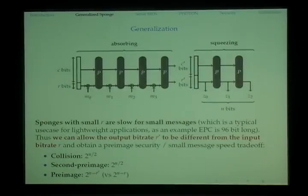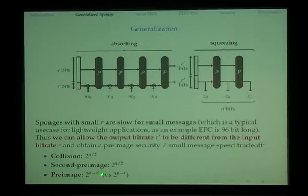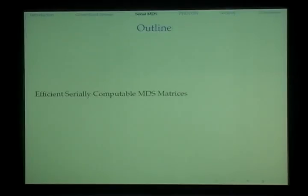A sponge with very small r can be very slow, which is not good for typical use cases such as EPC — Electronic Product Code — which is 96 bits. So we generalize the sponge construction a little to allow the output rate to differ from the input rate. The pre-image resistance level is revised to 2^(n - r'), so if we choose a slightly larger r' we can squeeze a bit faster but get slightly lower pre-image resistance.